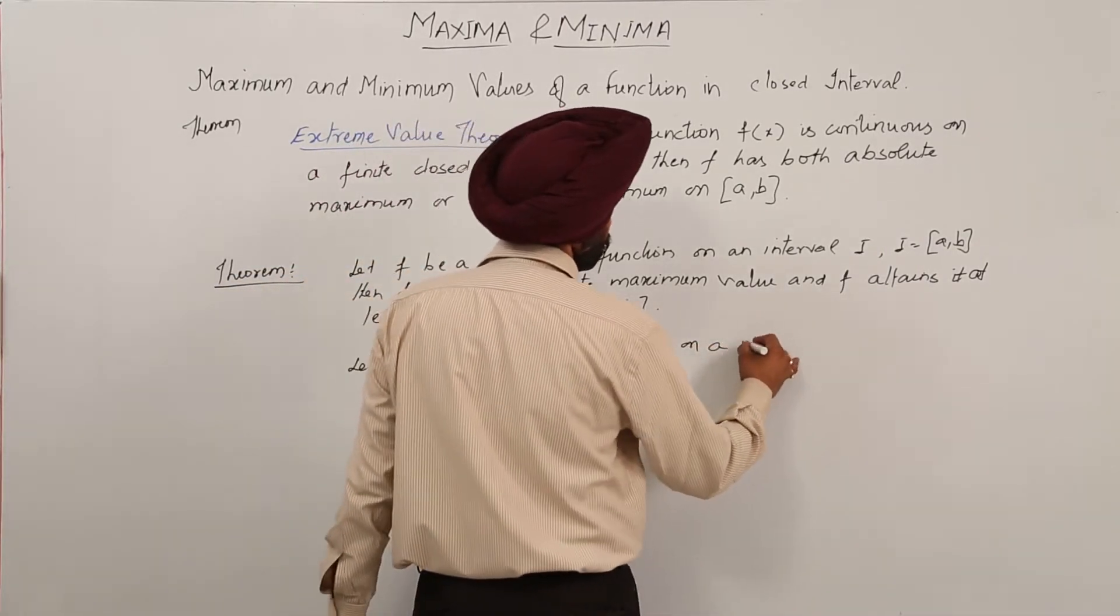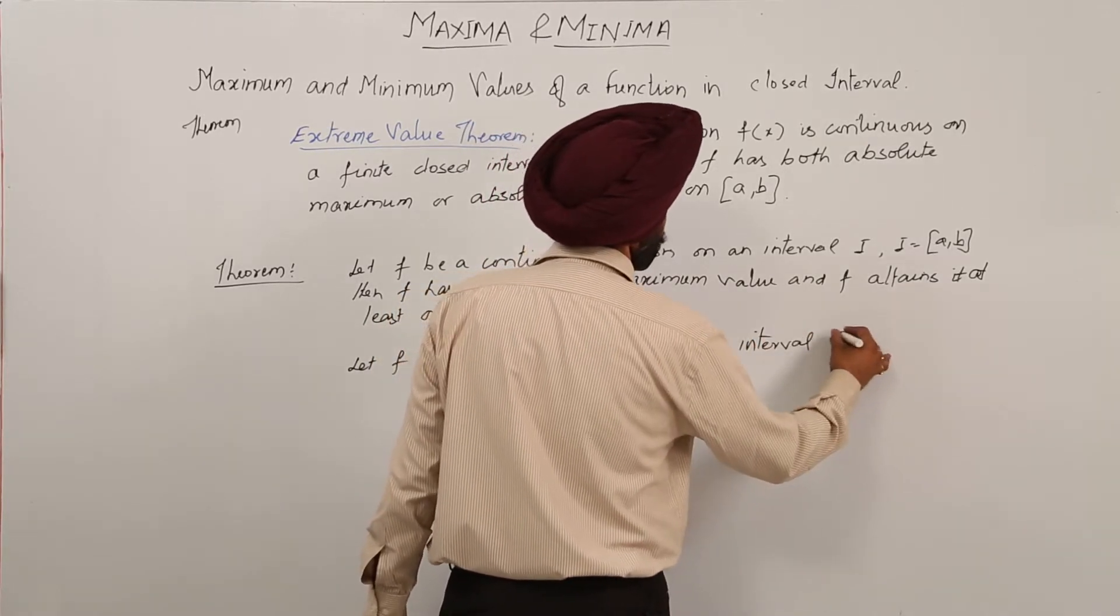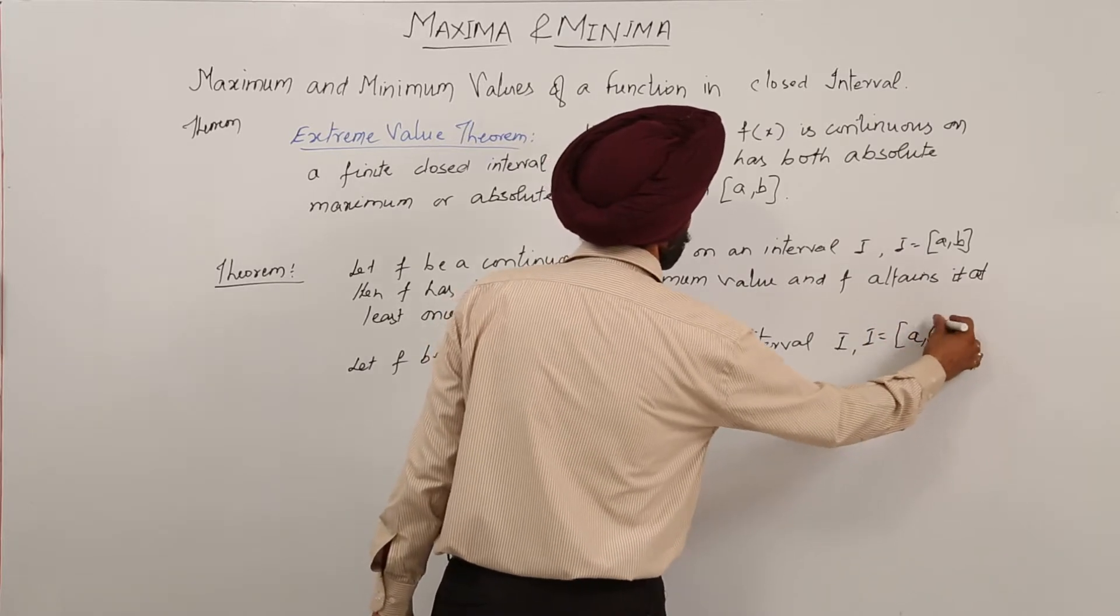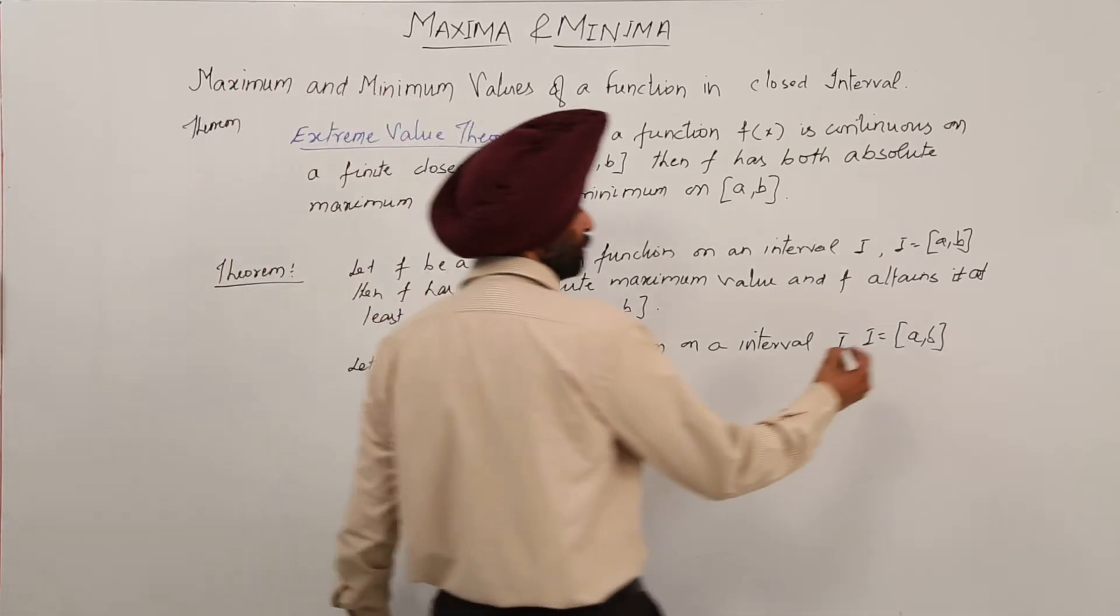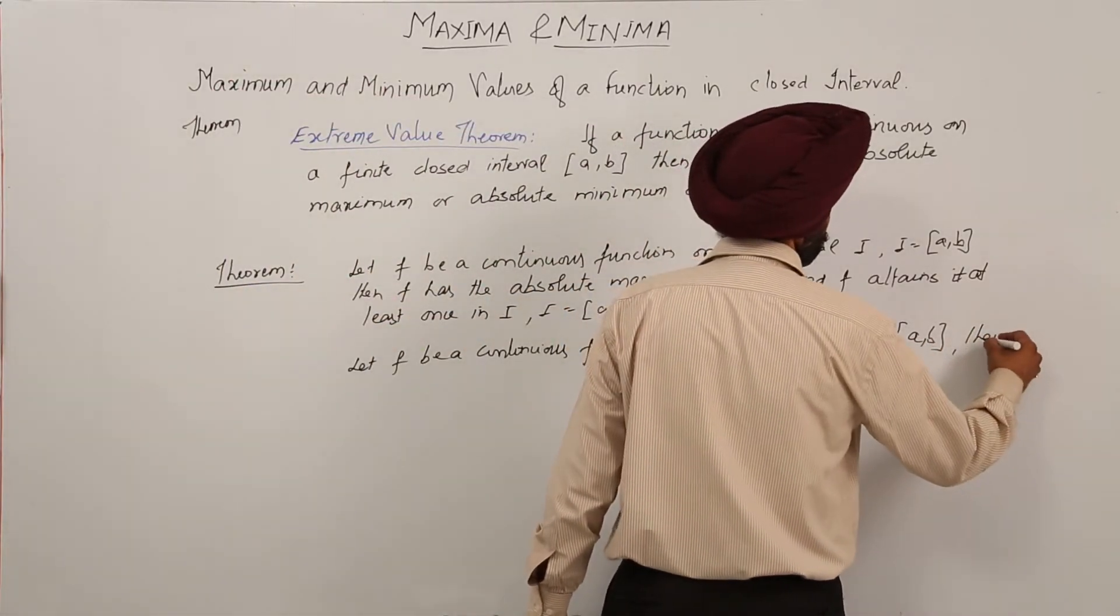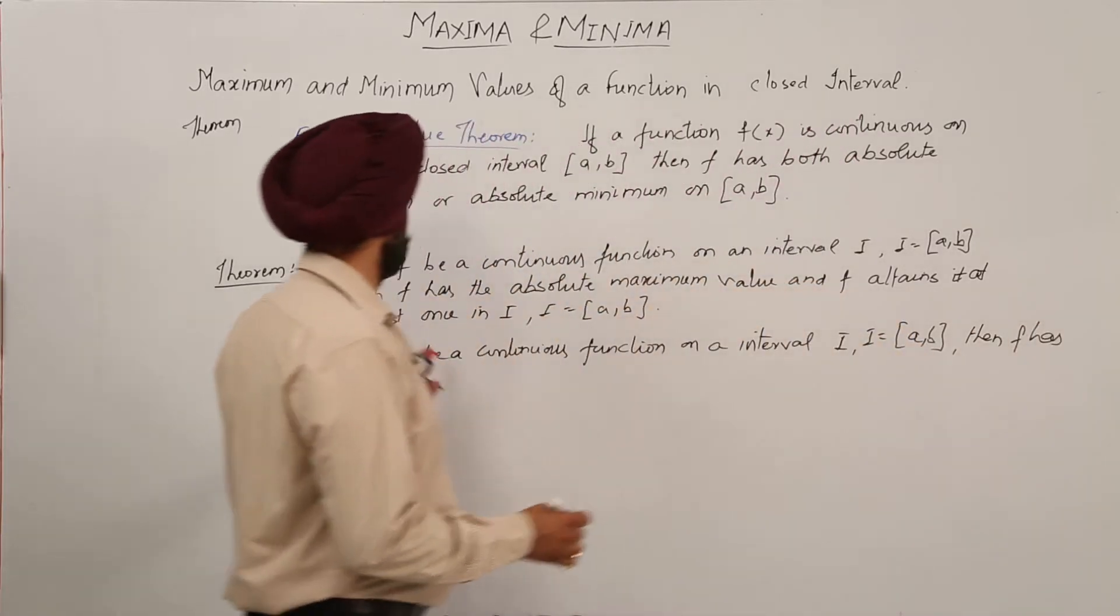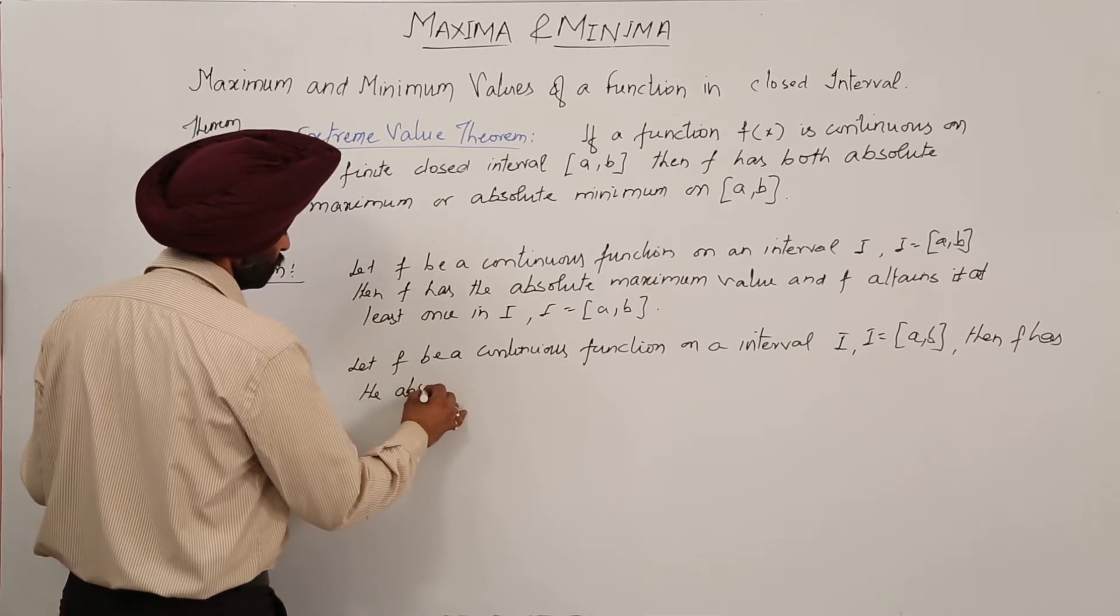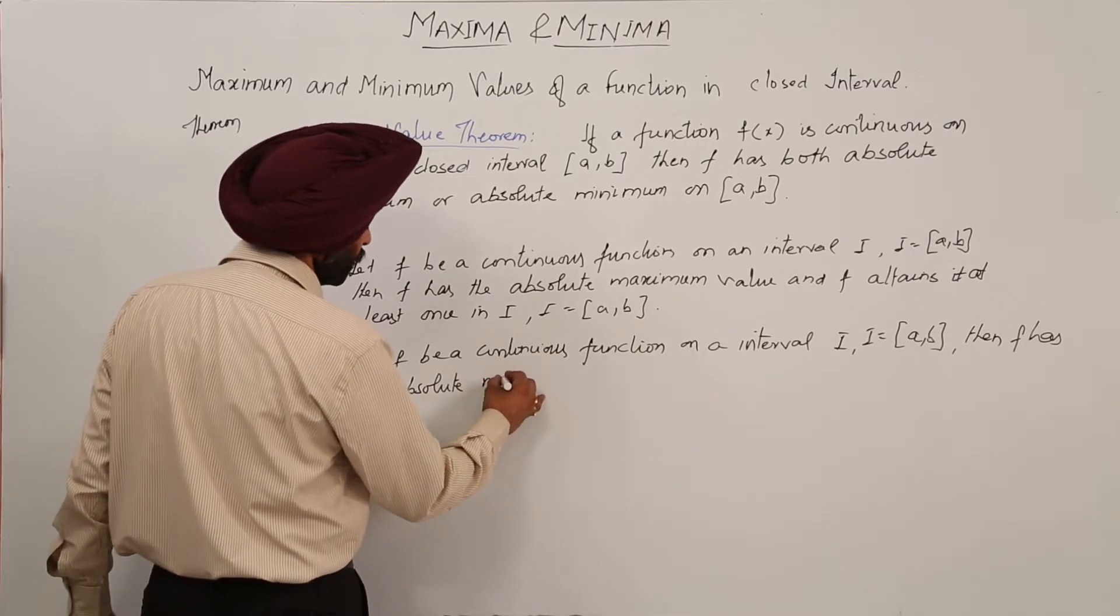on an interval I where I is called as a closed interval. Now then f has, then f has the absolute minimum value